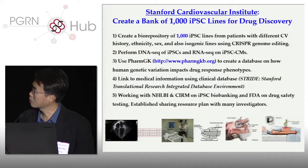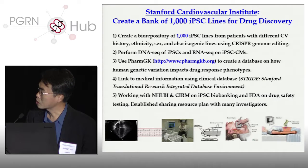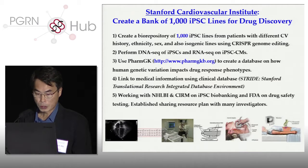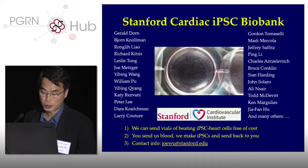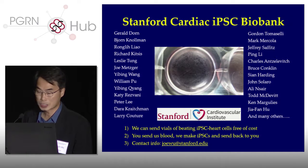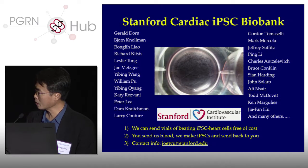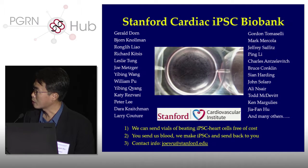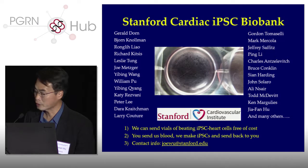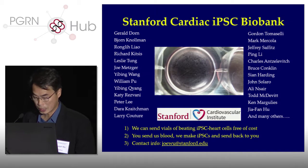We're also working with Russ Altman's group, linking to the PharmGKB database. We have the STRIDE database so that for each patient we know their clinical information. We're working with NHLBI and CIRM on iPSC biobanking and with the FDA on drug safety testing. We've established a robust sharing plan — if you ask us for these cells, we'll send them free of cost. You just pay for shipping. If you have patients that you need us to make iPSCs for and we don't have those patient cohorts, we're happy to make the iPSCs and send them back to you, also free of cost.